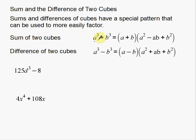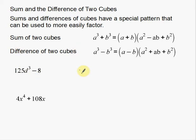When I have a sum of two cubes, that means I have a number being cubed — taken to the third power — plus another number being taken to the third power. A difference of two cubes is the same thing except with subtraction. Looking at this example, 125d³ minus 8: both numbers are cubed. 125 is 5 to the third power, d³ is obviously a cube, and 8 I can rewrite as 2 to the third power. So this is a difference of two cubes.